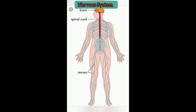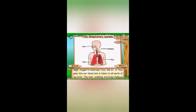For example, when you want to pick up anything, the nerves carry a message from the brain to the hand and the hand then picks up the object. Similarly, the body organs also send messages to the brain through the nerves. When you want to touch a hot object, the nerves in the skin send a message to the brain and the brain orders the hand to move away from the hot object.